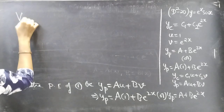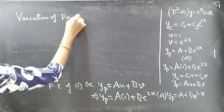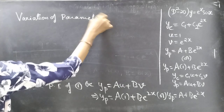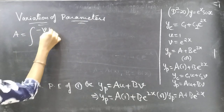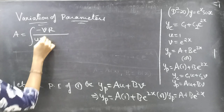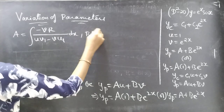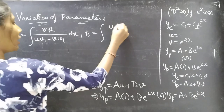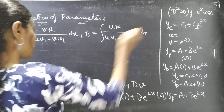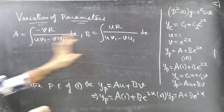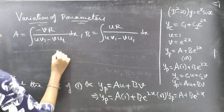By variation of parameters, a = ∫[-vR / (uv₁ - vu₁)] dx and b = ∫[uR / (uv₁ - vu₁)] dx. To find a and b we need to compute uv₁ - vu₁. We have u = 1 and v = e^(2x).